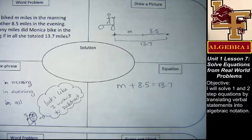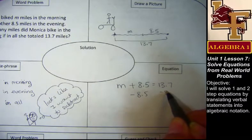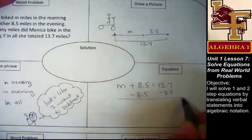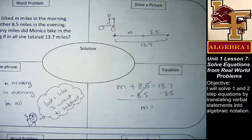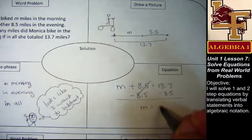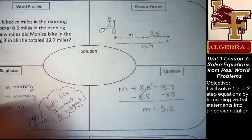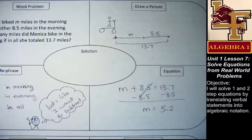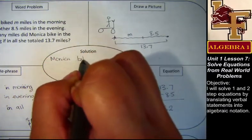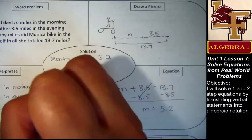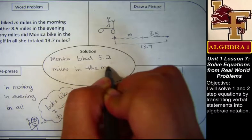All of you said that what you want to do is you want to subtract. So go ahead and at this time do the 13.7 subtract 8.5, and tell me how many miles did Monica bike in the morning? 5.2. So my solution, because my problem was written as whole sentences, my solution needs to be written as whole sentences. So Monica biked 5.2 miles in the morning.